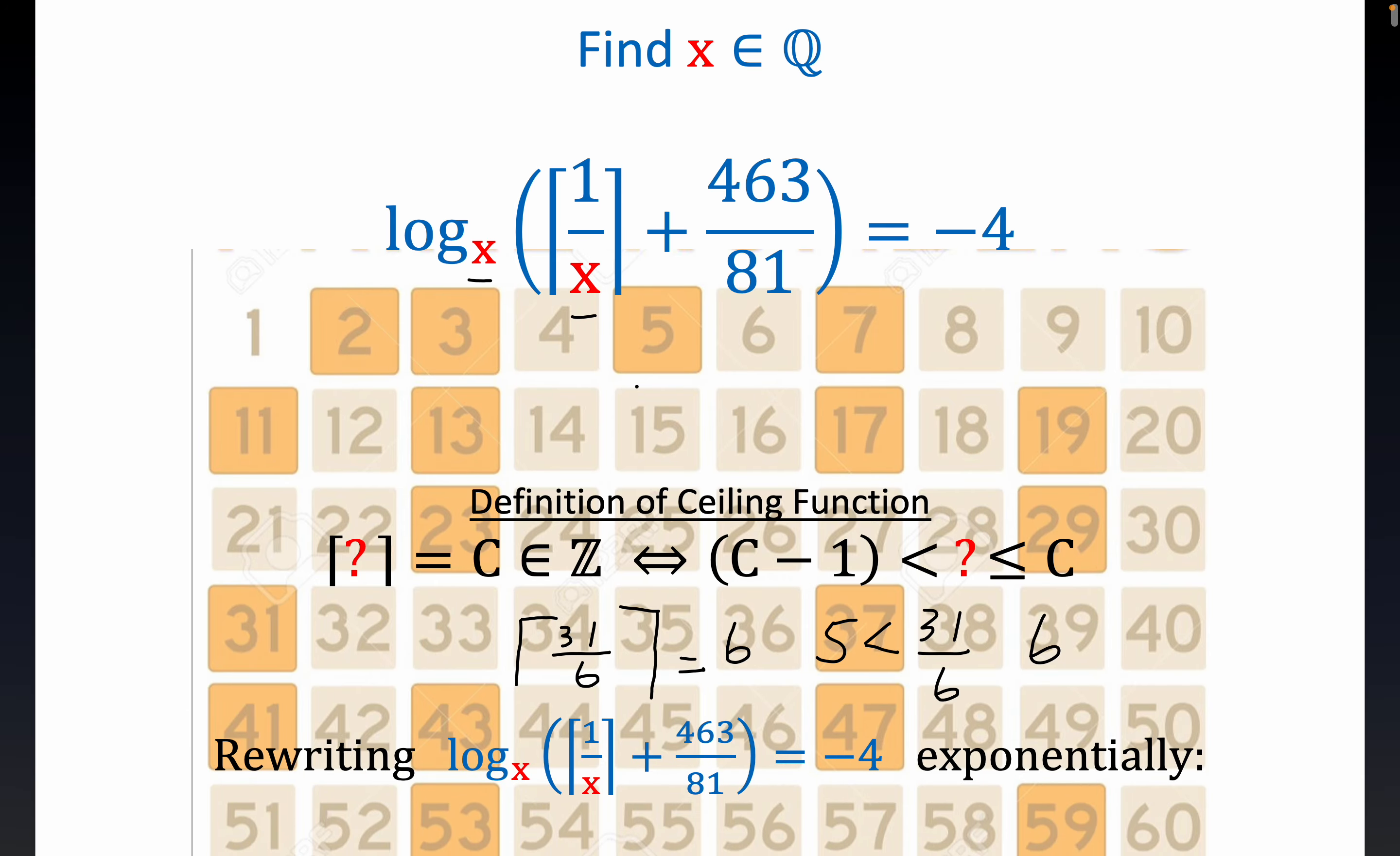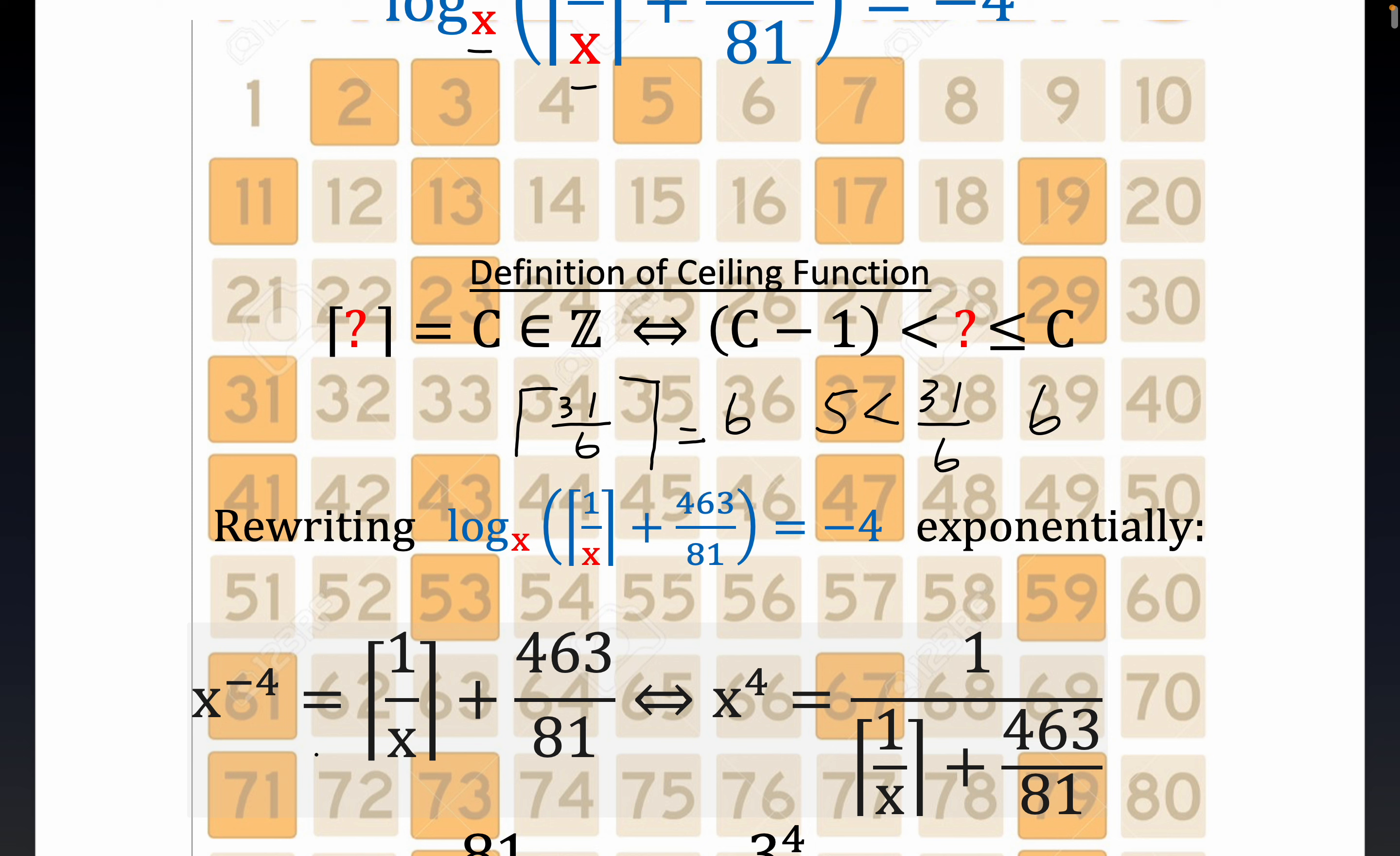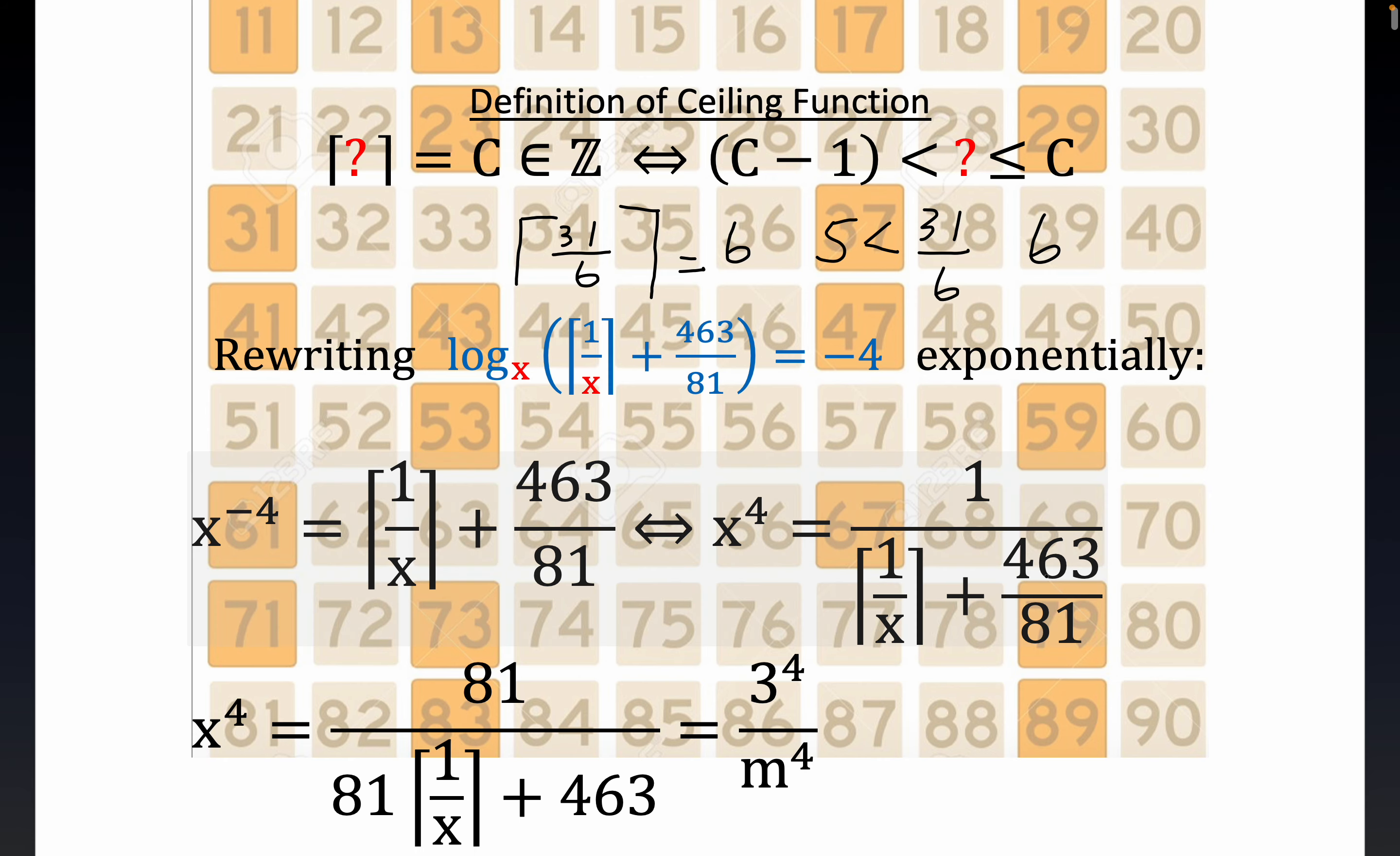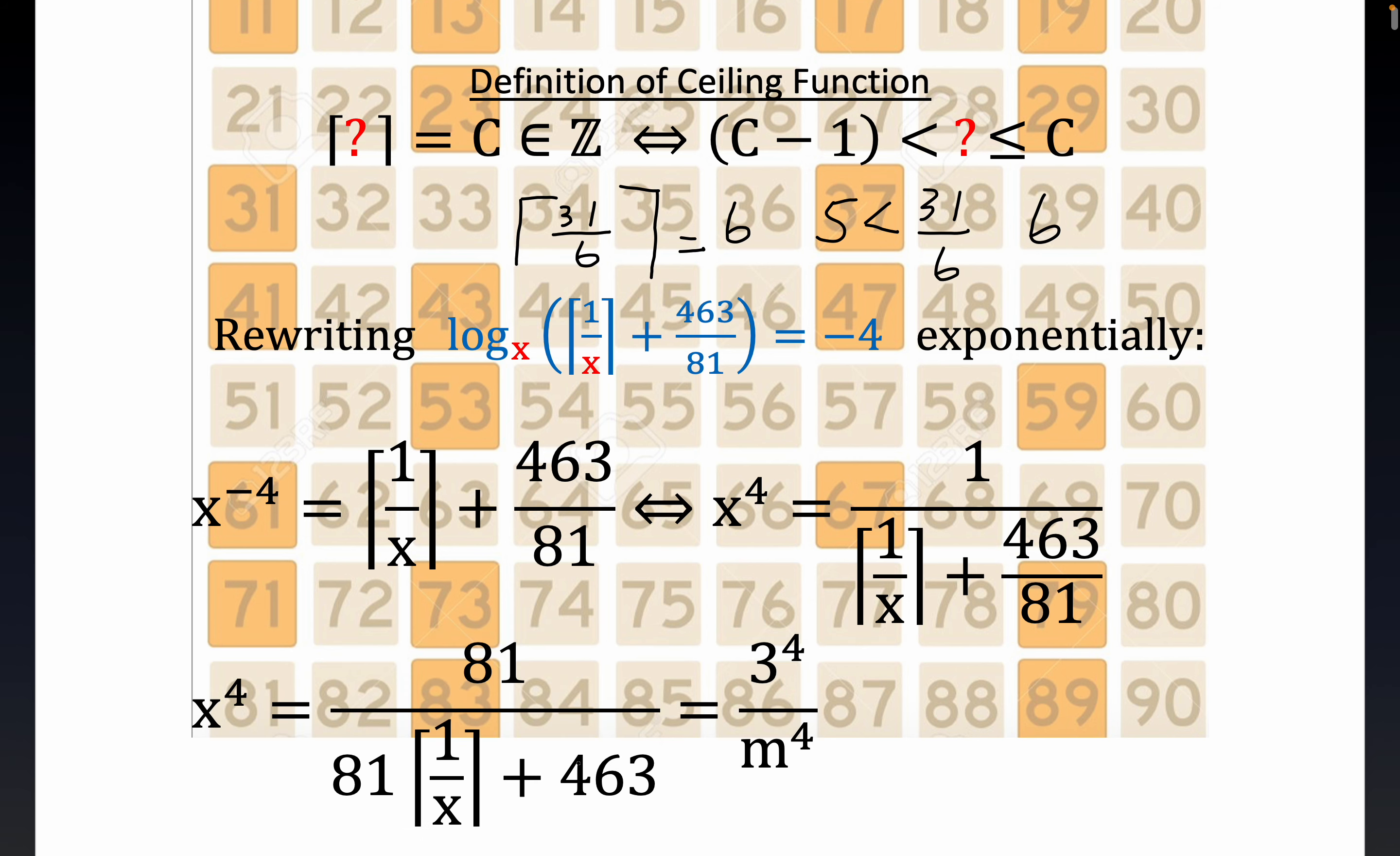Now, any logarithmic statement can be rewritten exponentially, and that's what I've done right here. This statement right here, I rewrote the thing exponentially because x is our base, minus 4 is our exponent, so you can write it like this. x to the minus 4th is equal to what was the input argument of the original log expression. Properties of exponents get us this far. The minus 4 disappears, it's just basic laws of exponents. If you multiply through by 81, you get something that's a little bit more manageable.